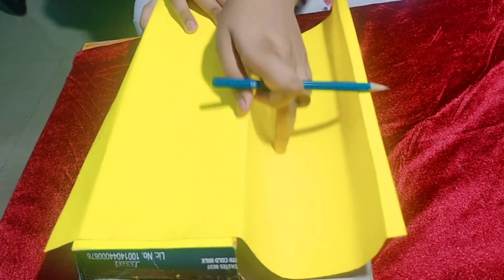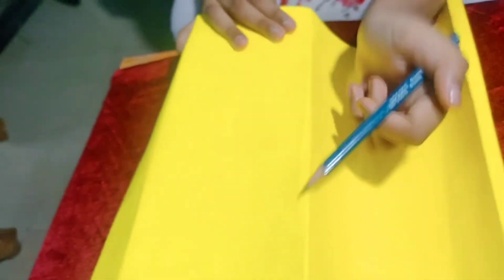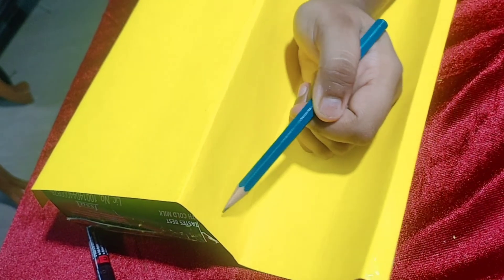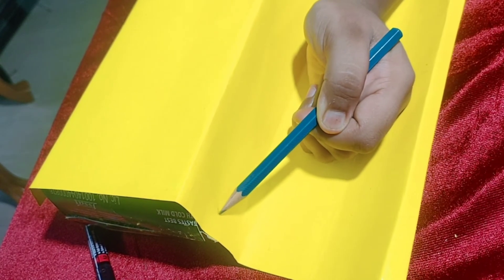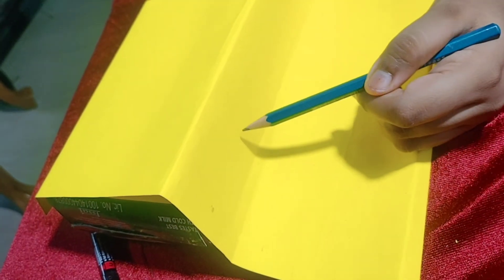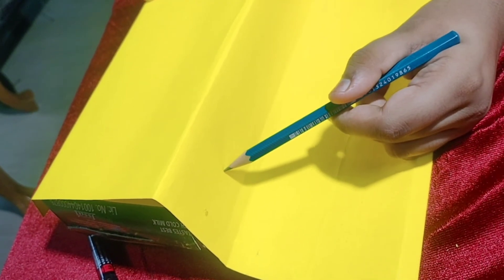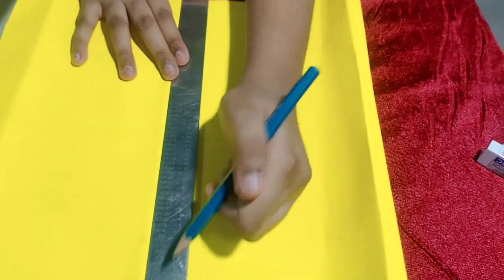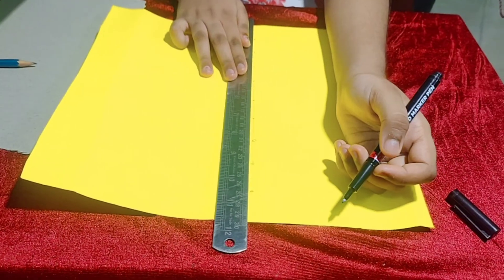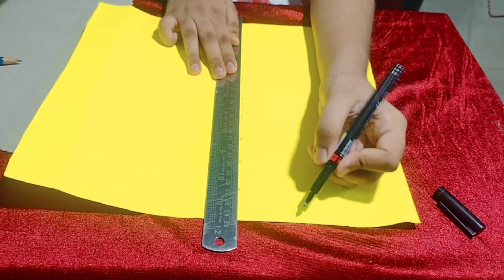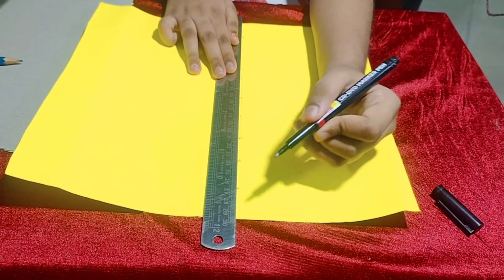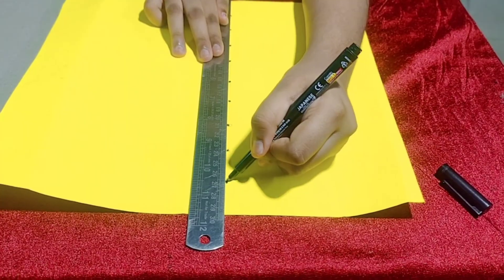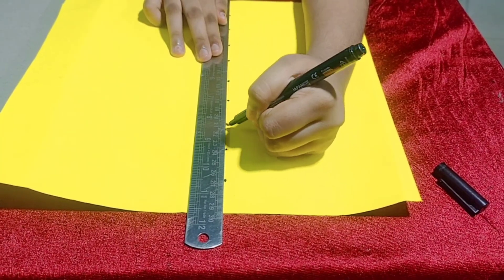Mark the middle portion of this area. Here we have to make holes to fix the number. I am drawing a line in the middle portion. This model consists of 9 digit number. So we have to make 9 holes. Let's mark the point where we have to make the hole. Leave 2.5 cm each.